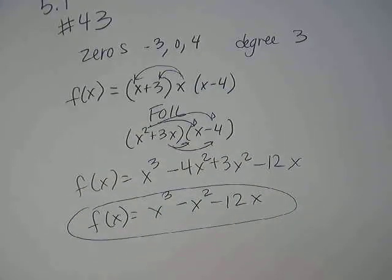So you take the zeros and turn them into factors. We're going backwards.